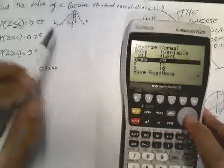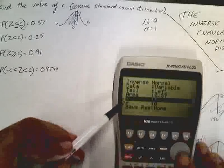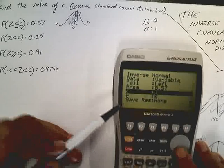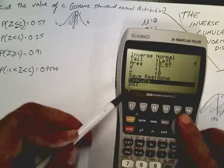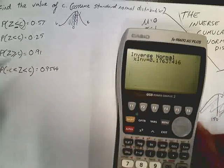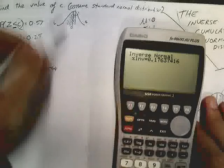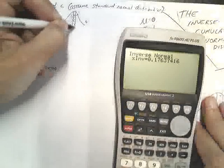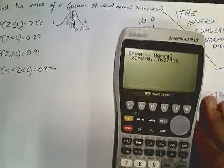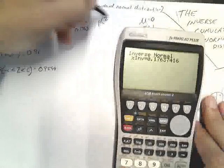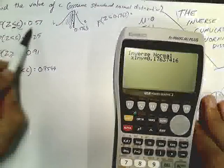Now, the area. The area that we're interested in, otherwise known as the probability, that's 0.57. Now, the standard deviation is going to be equal to 1, and the mean is going to be equal to 0. Now, I'm not sure if your calculators are going to sketch this. Mine doesn't. Mine will only calculate it. So, it's given me an inverse of 0.1763. Now, what does that number mean? That number means that this C value is 0.1763.